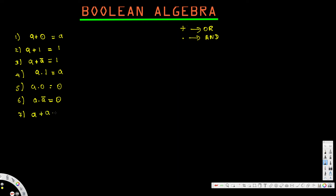For a + a: a can be one or zero. If a is one the result is one; if a is zero both are zero so the result is zero. It depends on a, so a + a = a. For a · a: if a is one then 1 · 1 = 1; if a is zero then 0 · 0 = 0. It depends on a, so a · a = a.